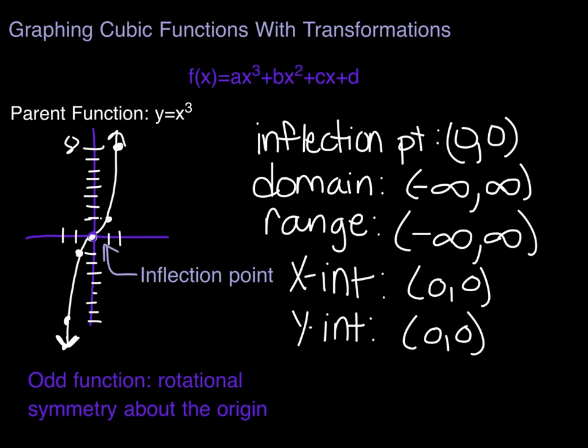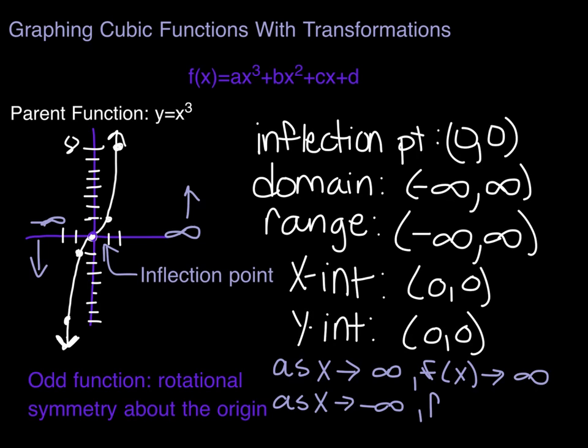And then the last thing that we will ask you about these is the end behavior. And remember, you have to write end behavior properly. We will say as x approaches, and you can start with positive infinity, it doesn't matter. But on the right, we're going up. So y or f(x) approaches positive infinity. As x approaches negative infinity, so as we're going to the left, we're going down. f(x) approaches negative infinity.